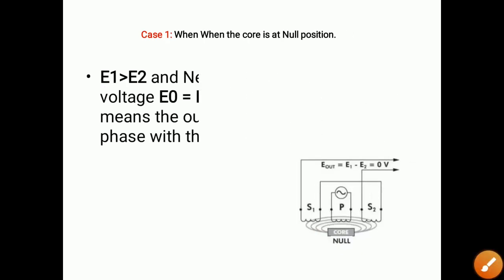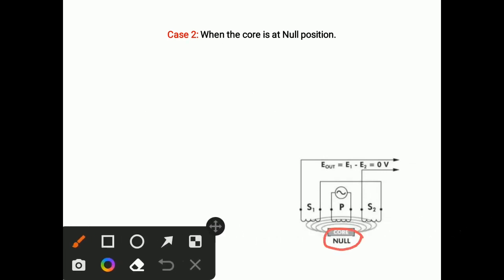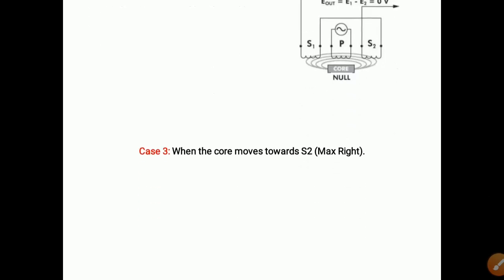Case two: when the core is at the null position, the center position. When the core is at the center, the voltage produced in S1 is E1 and the voltage in S2 is E2, and both voltages are equal. Therefore the output voltage is 0 volt, because E1 minus E2 equals zero. This shows that there is no displacement of the core when it is at the null position.